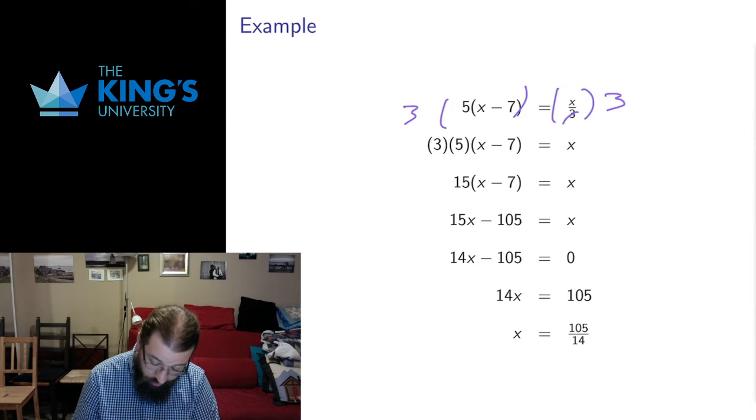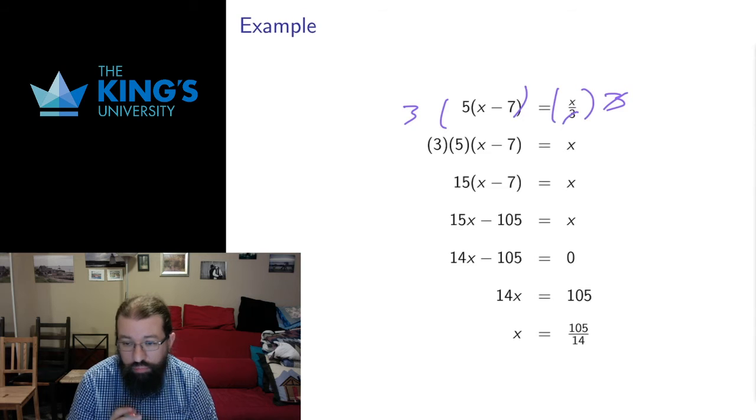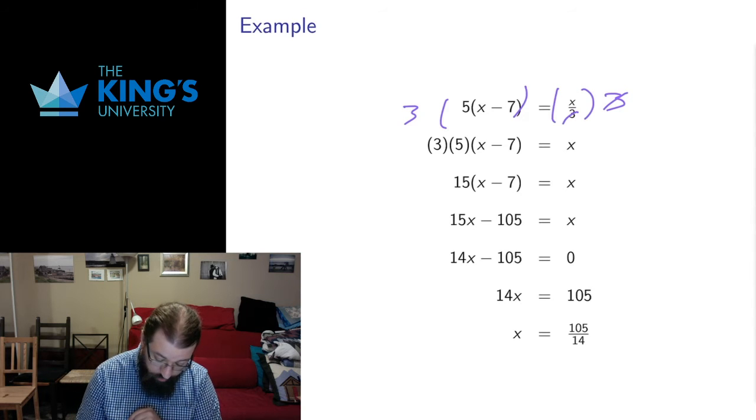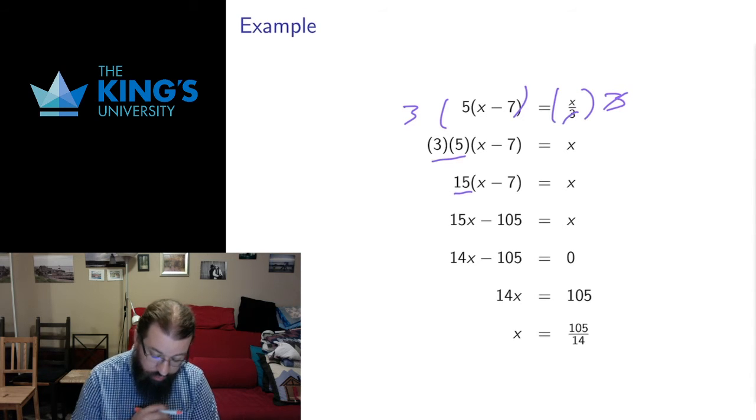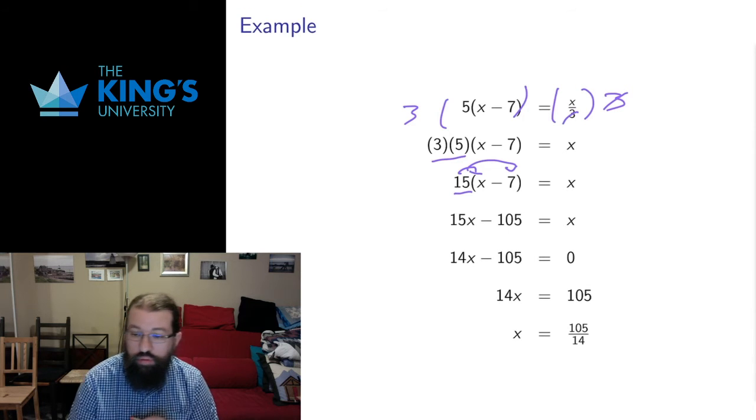On this side, divided by 3, multiplying by 3, that doesn't do anything - if you divide by 3 then multiply by 3, you haven't done anything. The 3s will cancel off. But I do have the multiplication by 3 on this side, and 3 times 5 on this side is 15. Then I can distribute the 15.